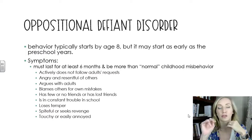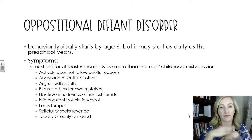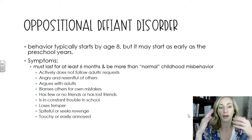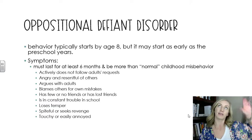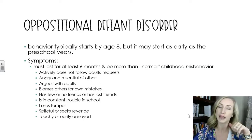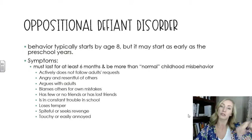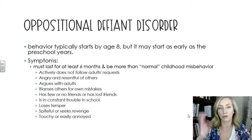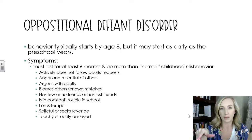Two of those comorbidities — oppositional defiant disorder and conduct disorder — we're going to talk about in more depth here. These were also mentioned back in the personality disorders notes under antisocial personality disorder, so you'll want to go back and make additional notes connecting those sections.